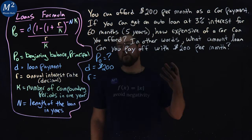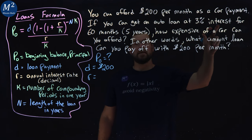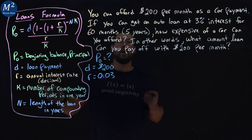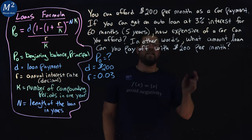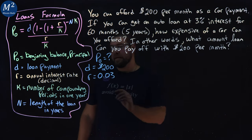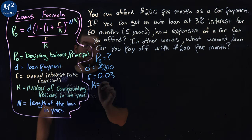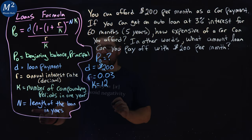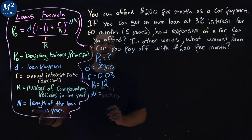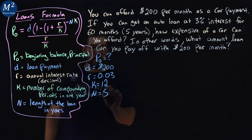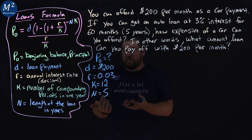Our R, our annual interest rate is 3%, as a decimal 0.03. Our K is the number of compounding periods, that is per month, monthly. So our K value is per month, which is 12 months in a year. And then N is the length in years, which was 60 months or five years. So five is our length in years.